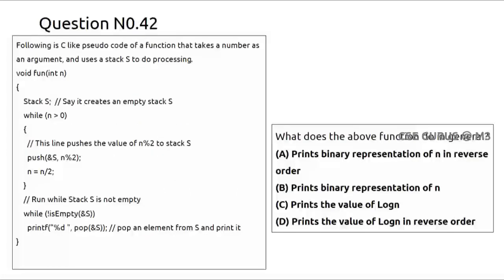Question number 42: a pseudocode is given that uses a stack. A number is taken as input. You push n mod 2 onto the stack — n mod 2 gives a remainder. Dividing by 2 repeatedly is the standard logic used to get the binary representation of a number.